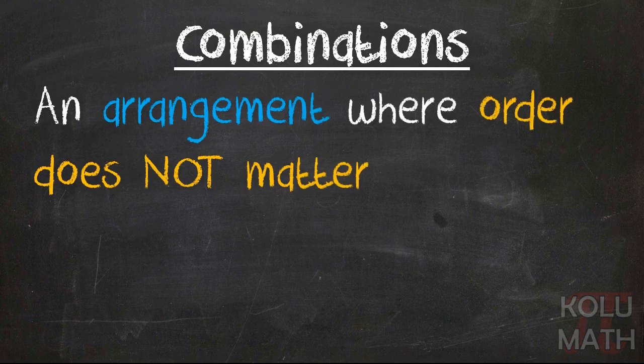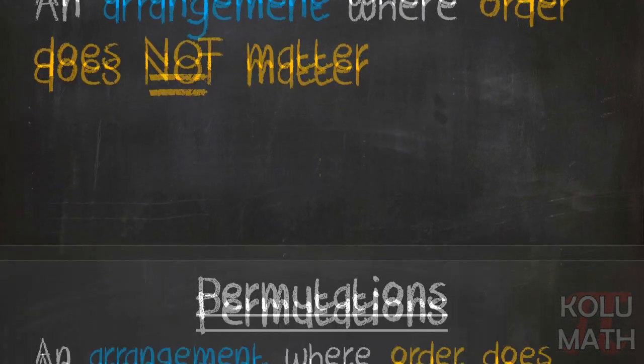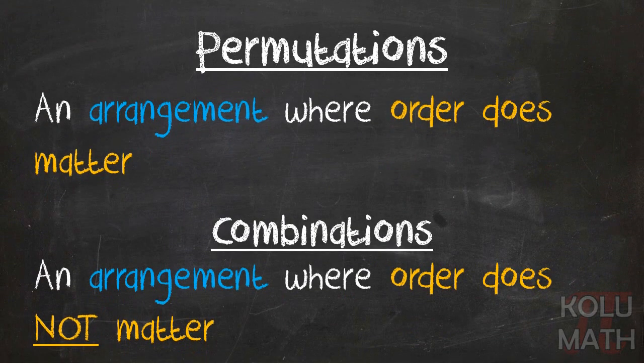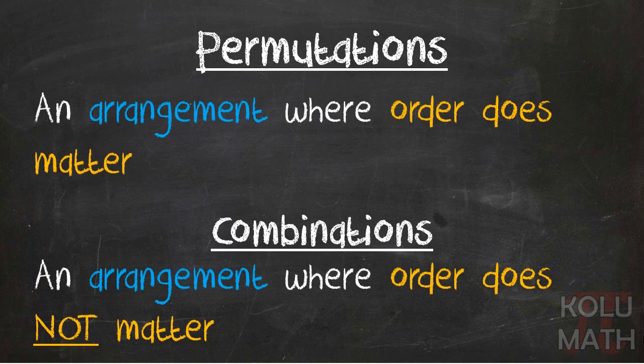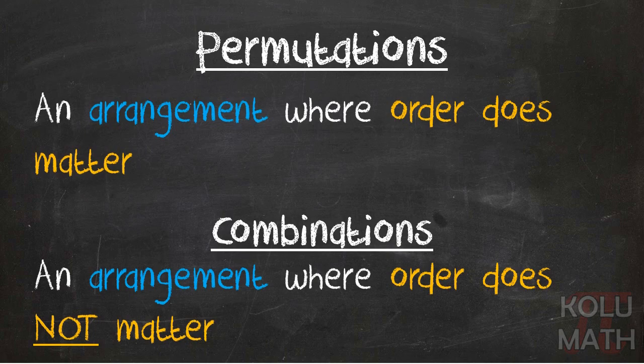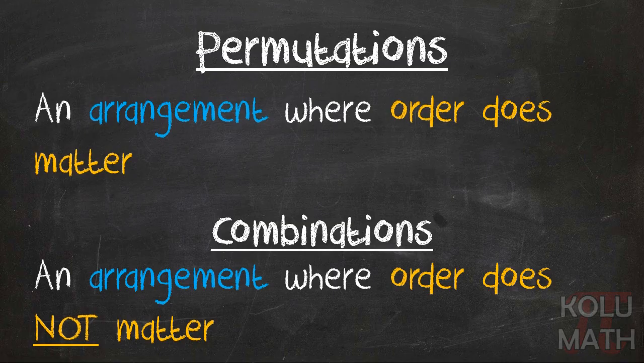A combination is an arrangement where order does not matter. And that should sound kind of familiar, actually. It's very similar to our definition for permutations, which are arrangements where order does matter. Combinations are very similar, except that order does not matter. And we'll get deeper into the relationship between the two of these later on.